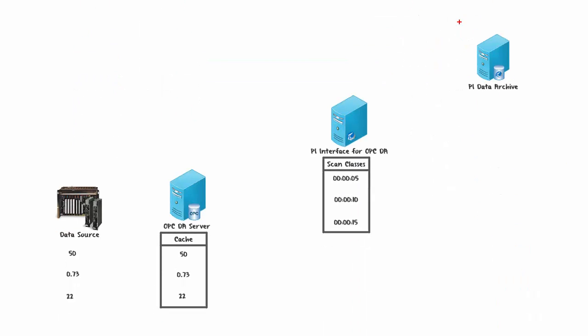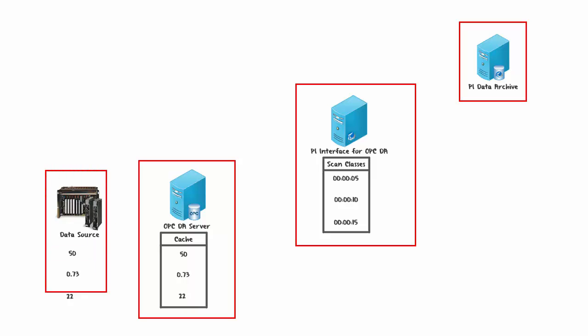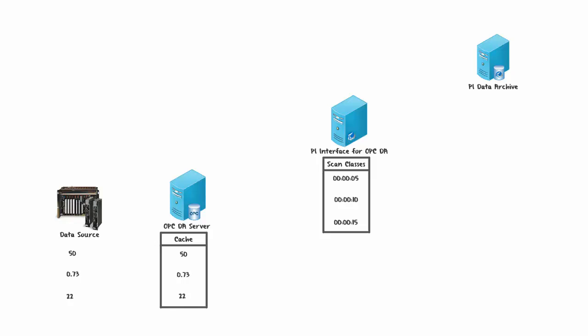Here we have a PI Data Archive, a PI Interface for OPC DA, an OPC Server, and a Data Source. One important concept is the OPC Server Cache — basically a table that the OPC Server keeps with the most recent values obtained from the Data Source. When the PI Interface for OPC DA starts, it scans the PI Data Archive for PI Points belonging to its different Scan Classes, which are turned into OPC Groups, and makes requests to the OPC Server for those groups.